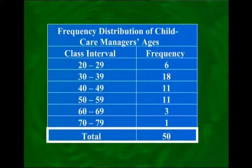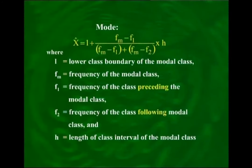In order to find the mode, we note that we are dealing with a continuous variable — age. Hence, the mode is obtained by the formula: x-hat equals l plus (fm minus f1) over (fm minus f1 plus fm minus f2), multiplied by h.